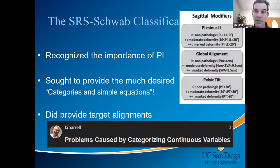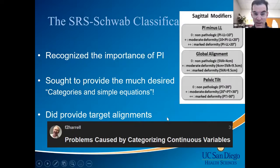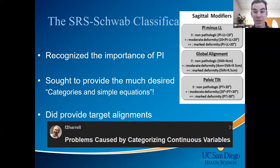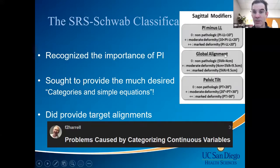The first comprehensive alignment classification that discussed all these relative lumbopelvic parameters was really SRS-Schwab. The beauty of it is that Schwab recognized the importance of pelvic incidence and the relationship between pelvic incidence and lumbar lordosis in terms of creating disability or lack thereof. It provided early rudimentary alignment targets and nice categories with simple equations — mild, moderate, severe.